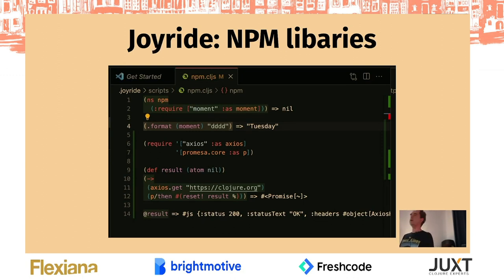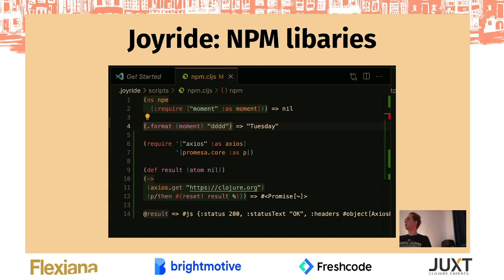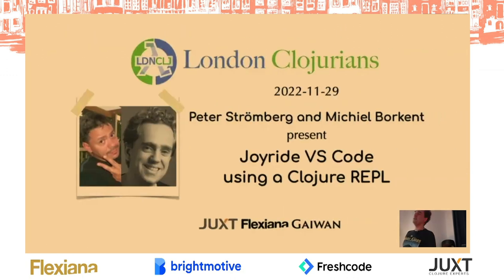In recent versions you can also use NPM libraries from Joyride directly — the whole NPM ecosystem is available to you. For example, we have Moment.js and Axios, which is an HTTP client in Node. You can do all this from your editor to make it more convenient for yourself, like we're used to in Emacs. If you want to know more about Joyride, Peter and I are giving a talk next month at the London Clojurians.